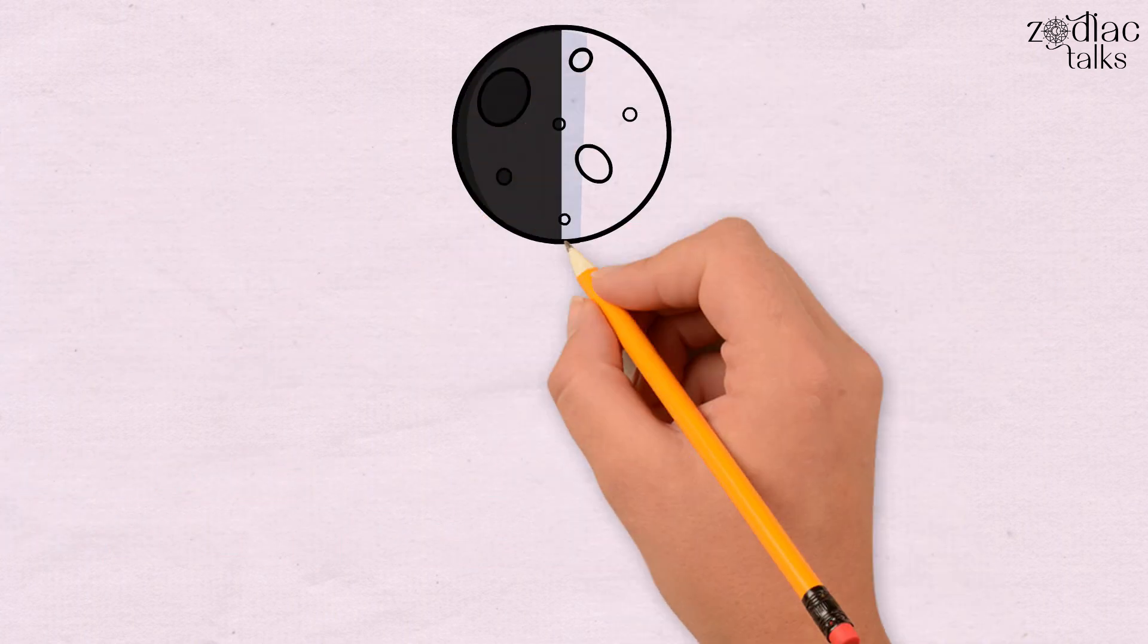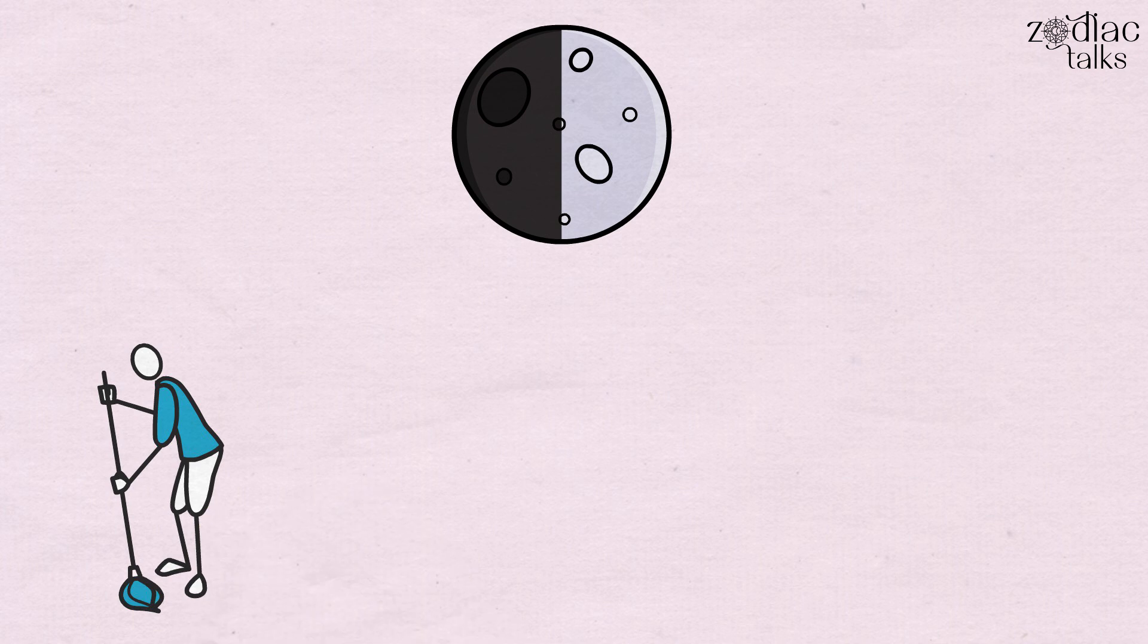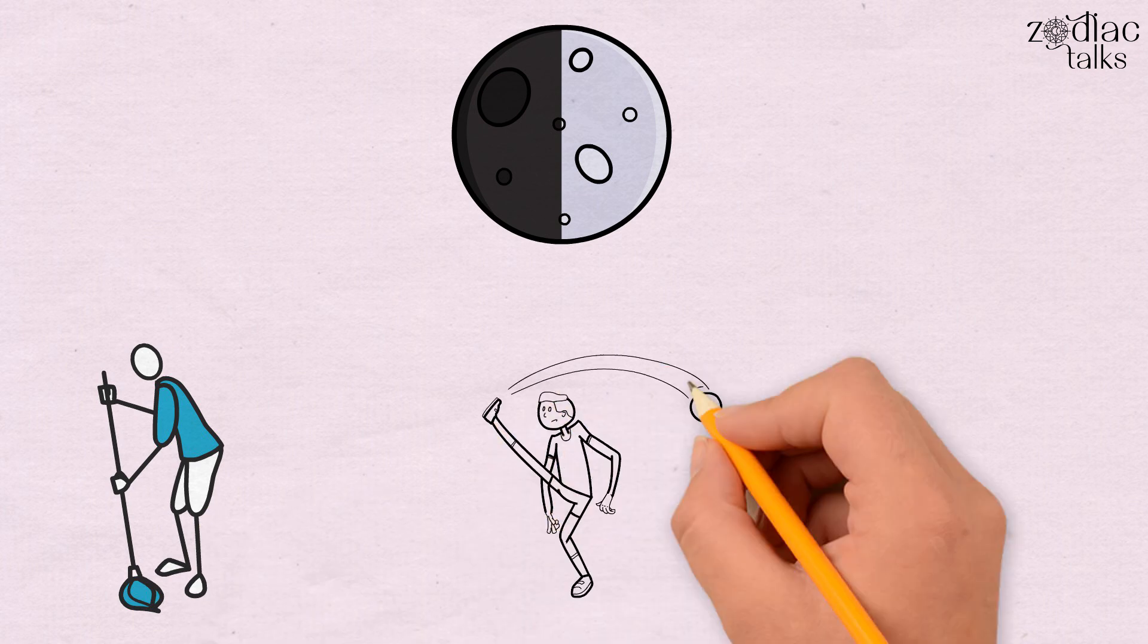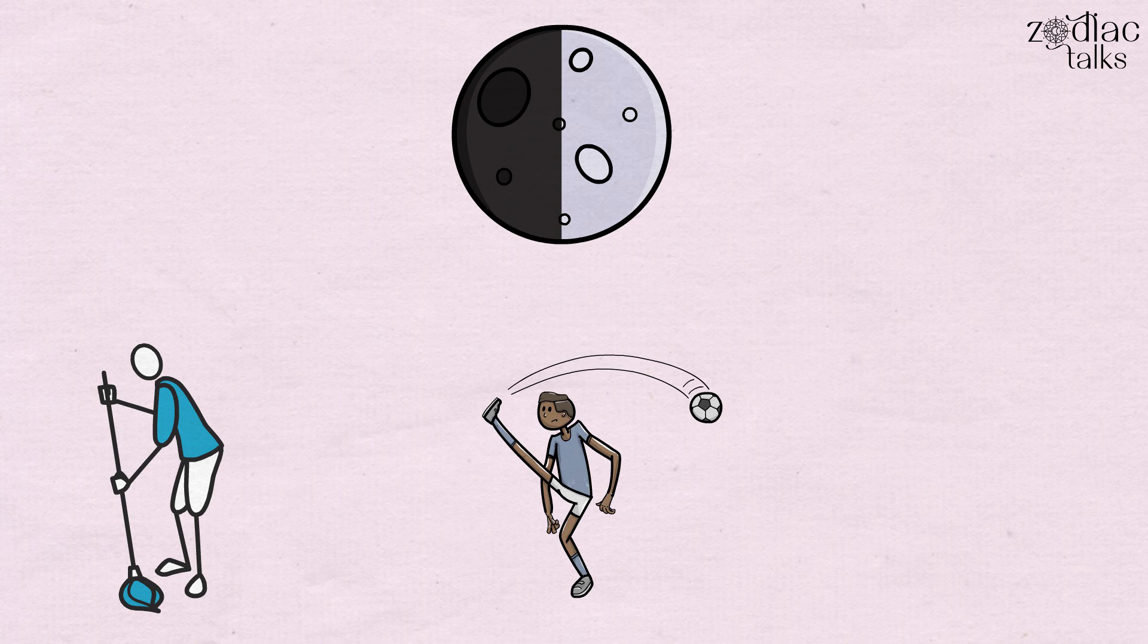That's why people with the Sun or Moon in the Sixth House are adept at cleanliness and order. They need their surroundings to be free of obstacles, their mind clear, and their emotions in order to function correctly.